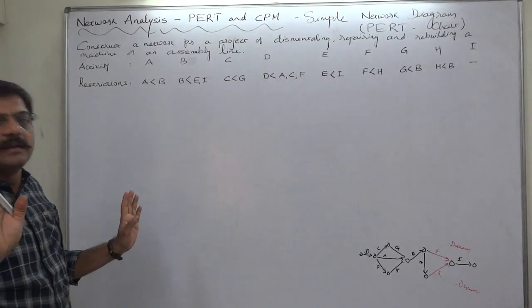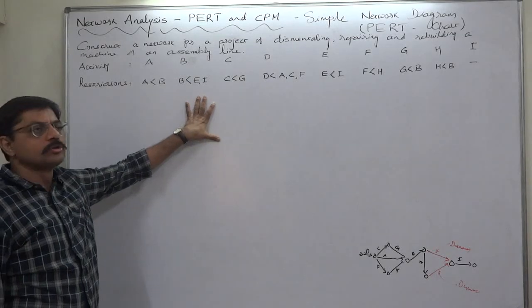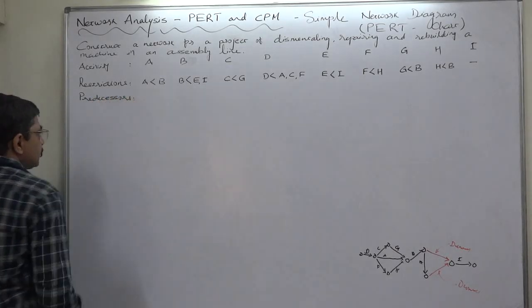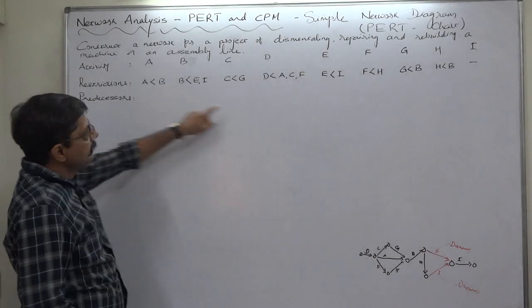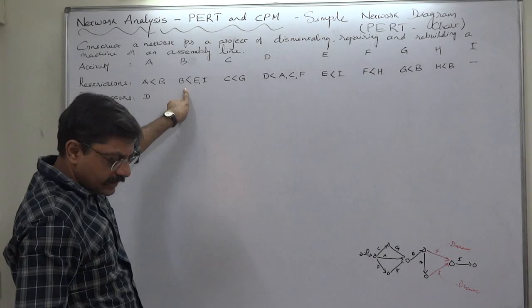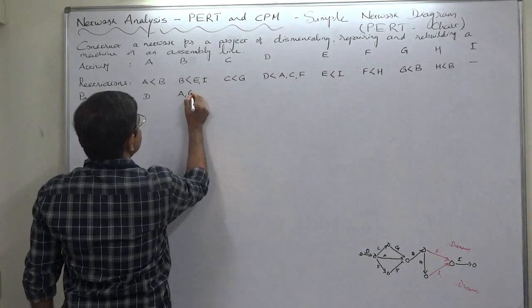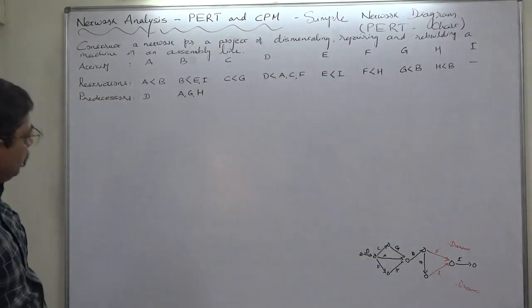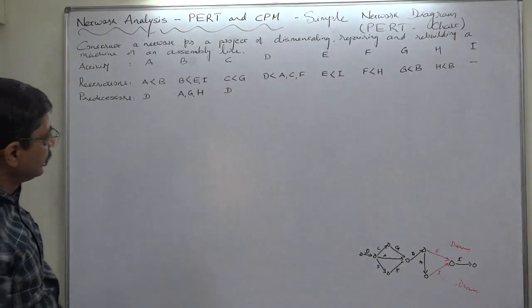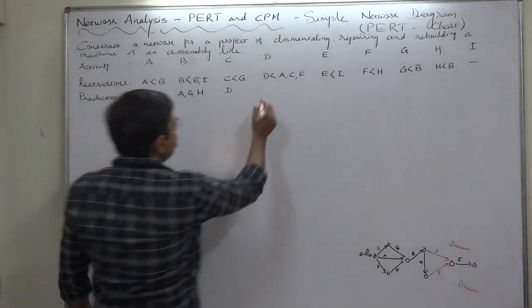We are not habituated to draw a network diagram from this kind of information, so to make it easy, let's first of all write the predecessors. A's predecessor is D. Which one is predecessor of B? There are three predecessors of B: A, G, and H. C: D is predecessor of C, only D. D: No activity is predecessor of D, that means D is the initial activity.